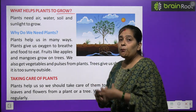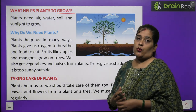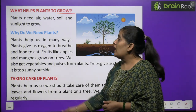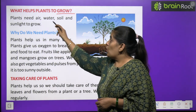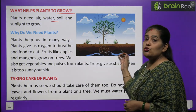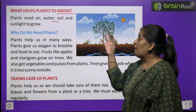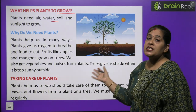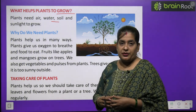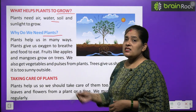Now we will learn what helps plants to grow. पौधे को बढ़ने के लिए क्या जरूरत होती है? Plants need air, water, soil and sunlight to grow. पौधे को बढ़ने के लिए हवा, पानी, मिट्टी और सूरज की रोशनी की जरूरत होती है।